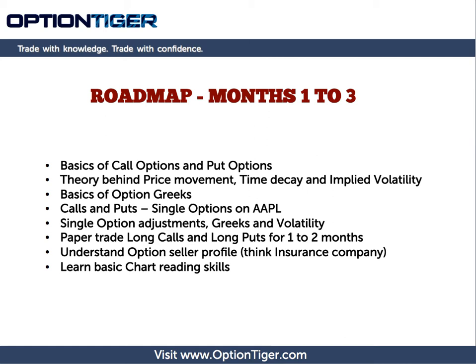You need to understand the history behind options. All options, if you've not heard of this term before, are wasting assets, which means they expire. You can have options that expire this month, next month, in 3 months, in 6 months, in 2 years — but all options expire. There's a definite time limit for each of these options, and that adds a level of complexity into how these instruments behave.